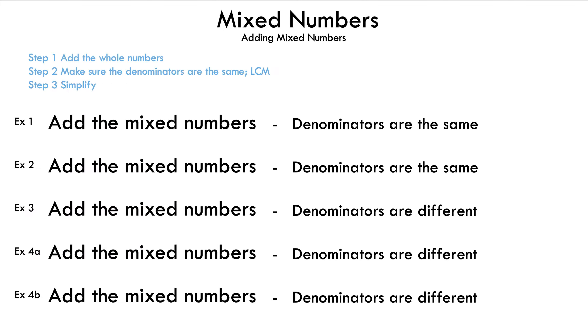Now let's take a look at the examples we're going to discuss in today's video. In examples 1 and 2, the denominators are the same. In example 3, 4a, and 4b, the denominators are different.